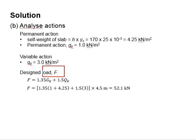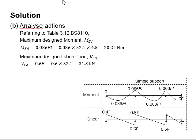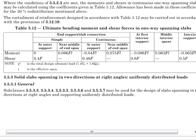You need this design load to compute the moment and shear load acting on the member based on the table given in BS. Referring to table 3.12 in BS8110, the maximum moment will be 0.086 FL and the maximum shear load will be 0.6 F.